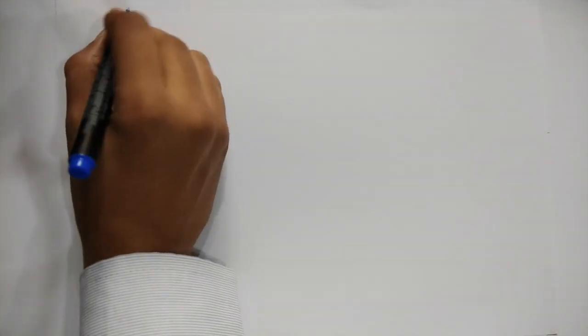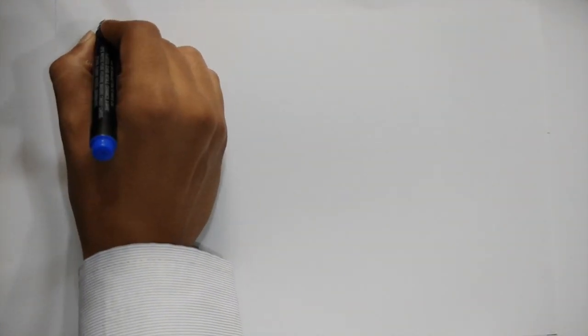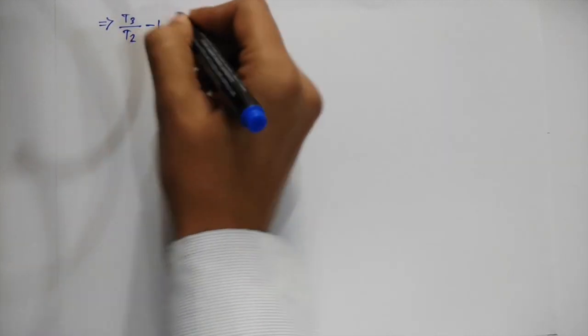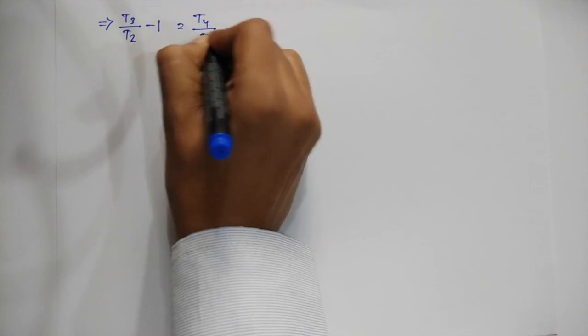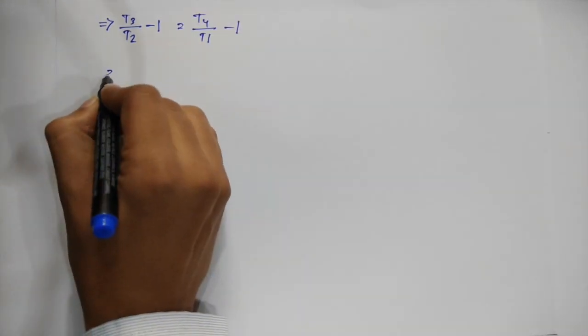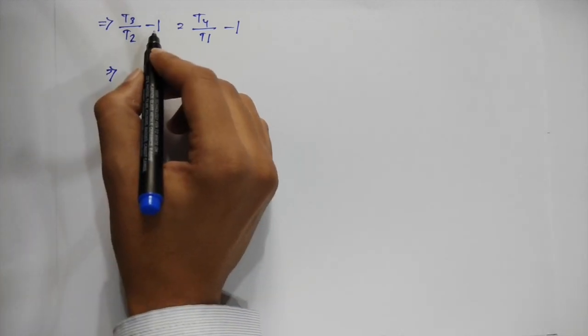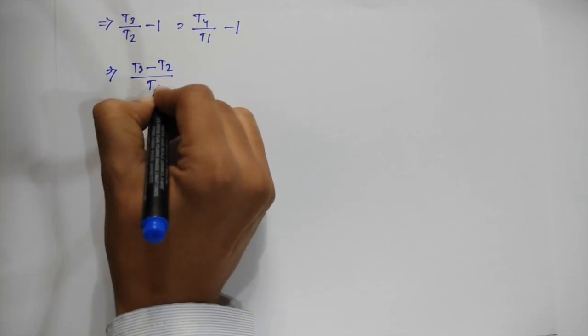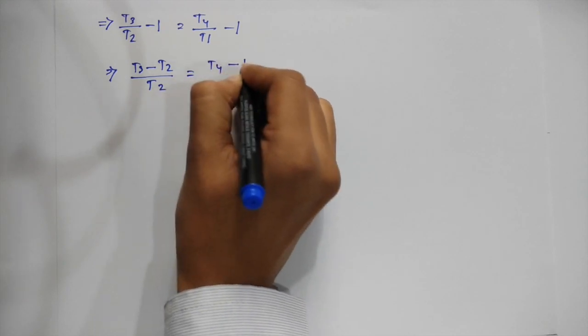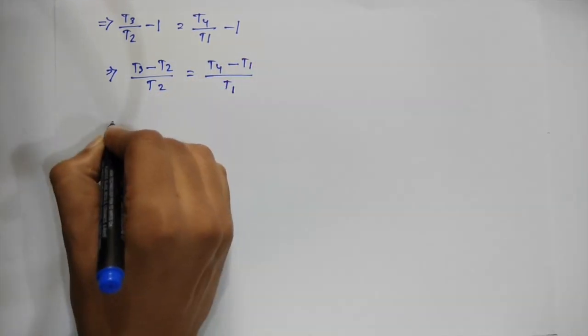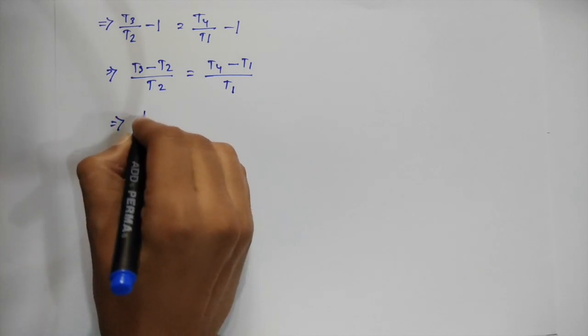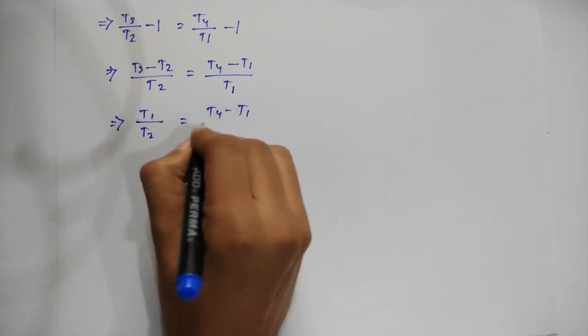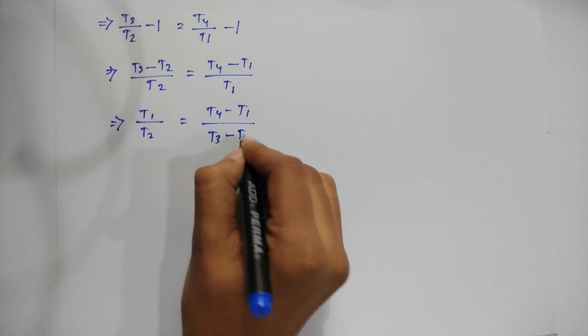Subtracting 1 from both sides, we get T3 by T2 minus 1 is equal to T4 by T1 minus 1, which implies that T3 minus T2 by T2 is equal to T4 minus T1 by T1, which implies that T1 by T2 is equal to T4 minus T1 by T3 minus T2.